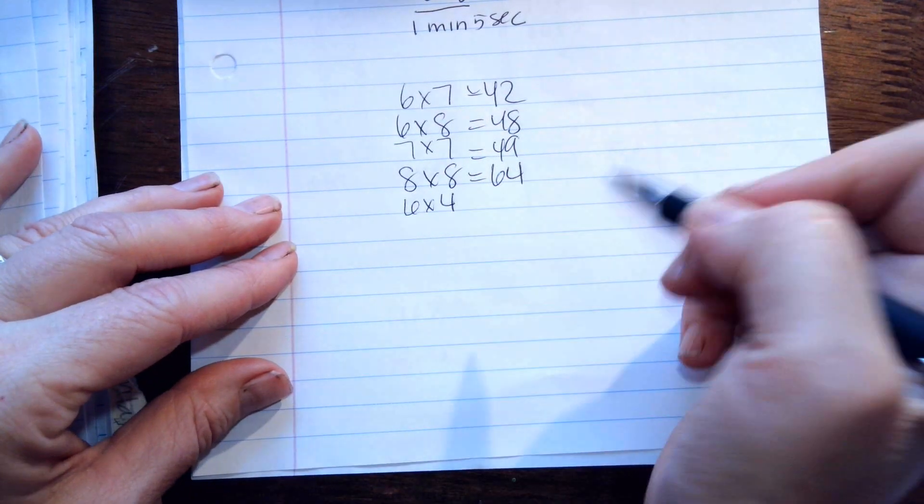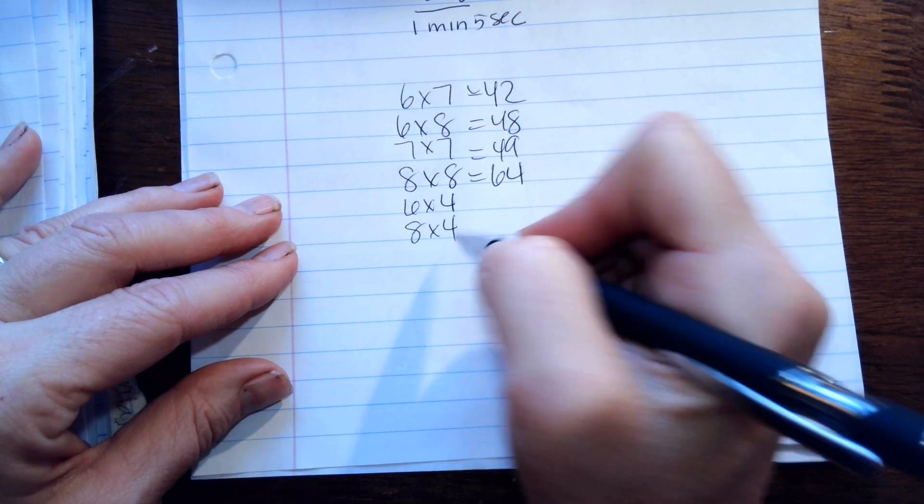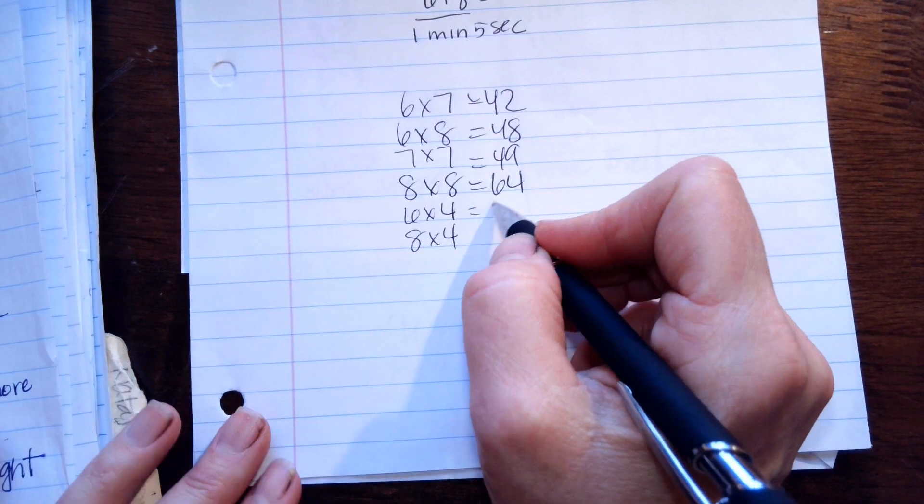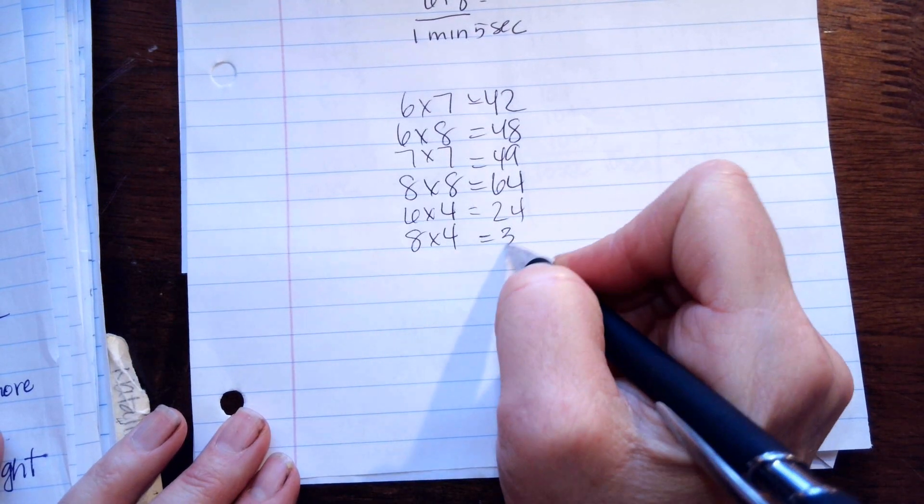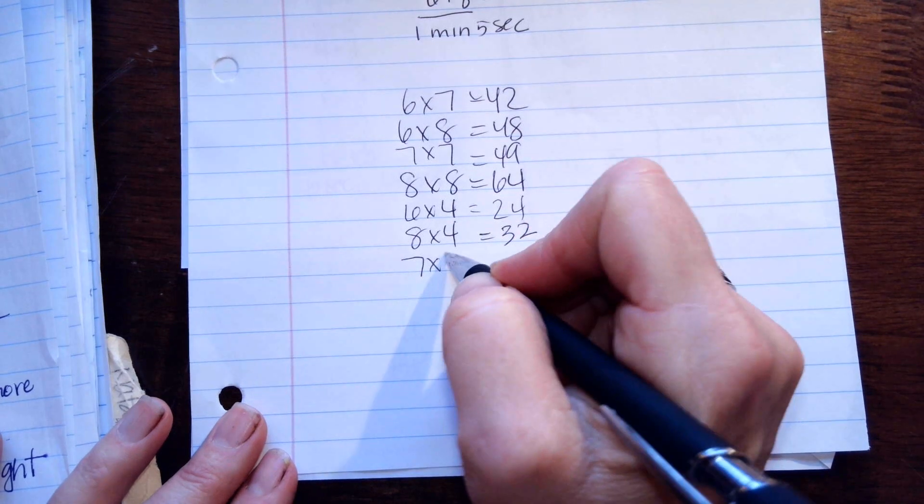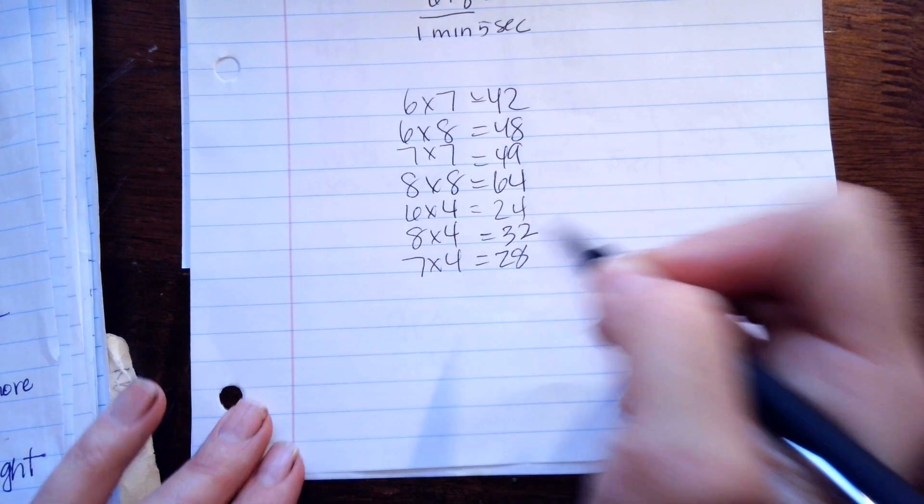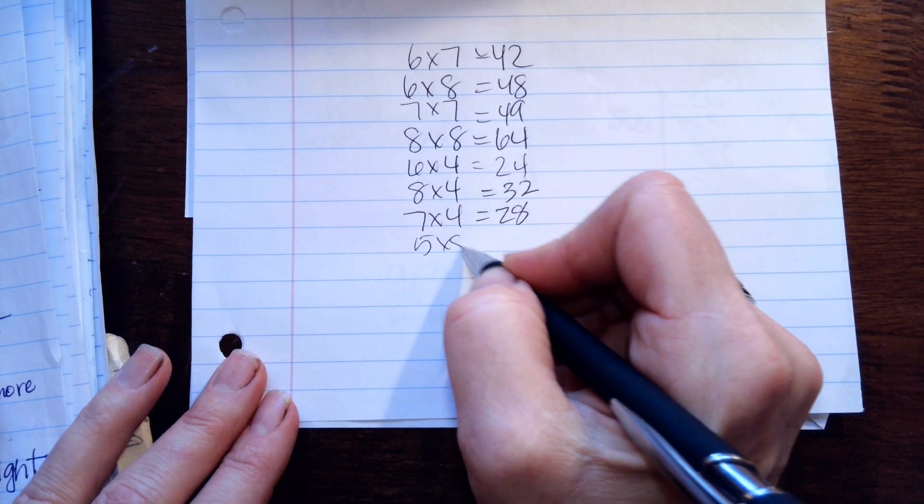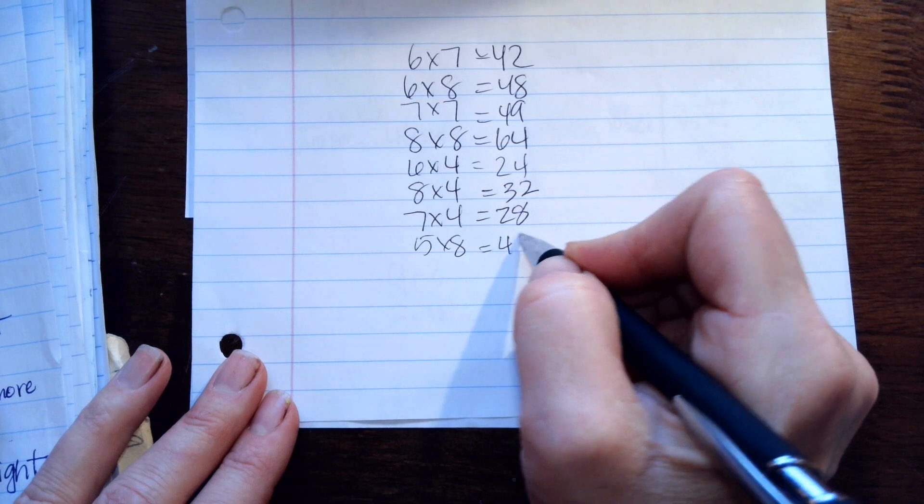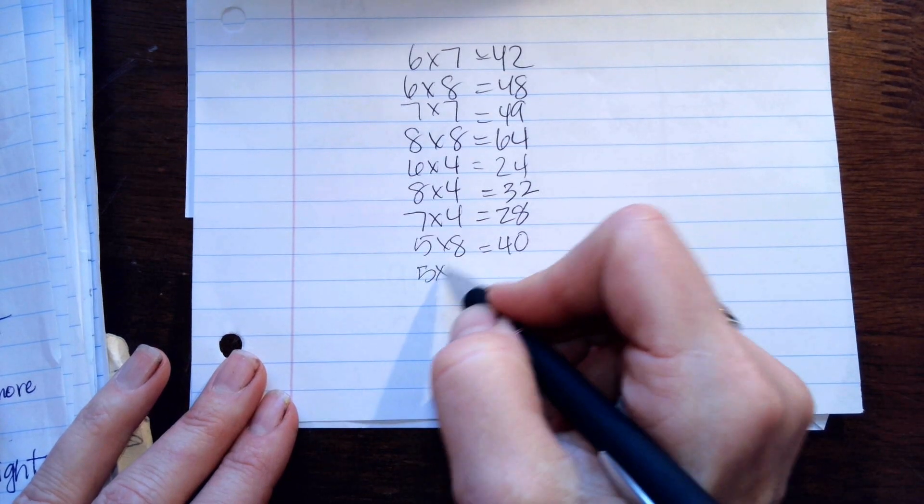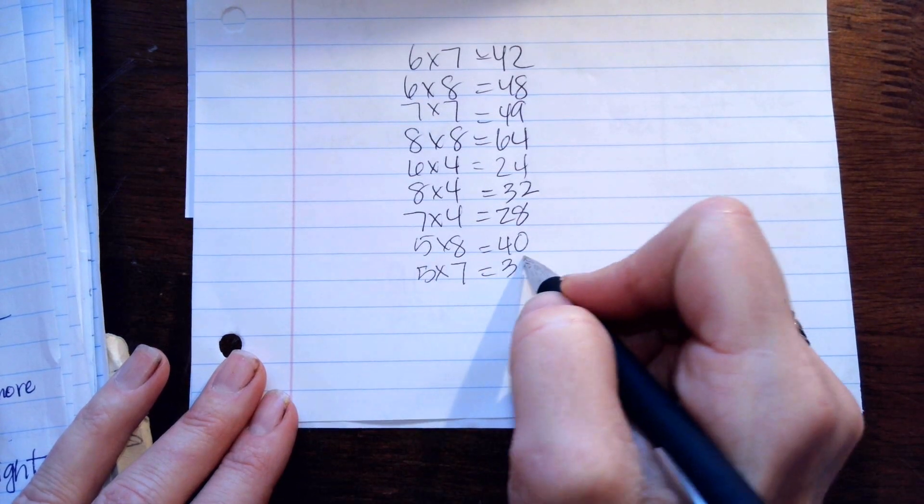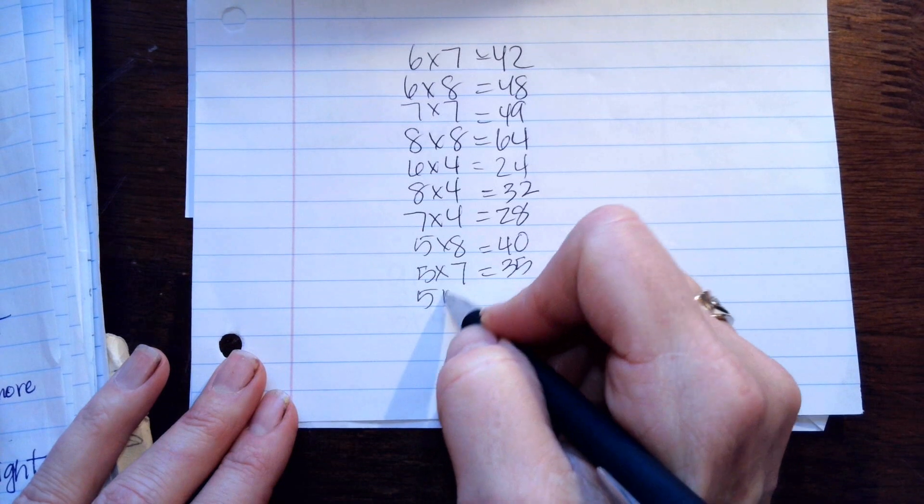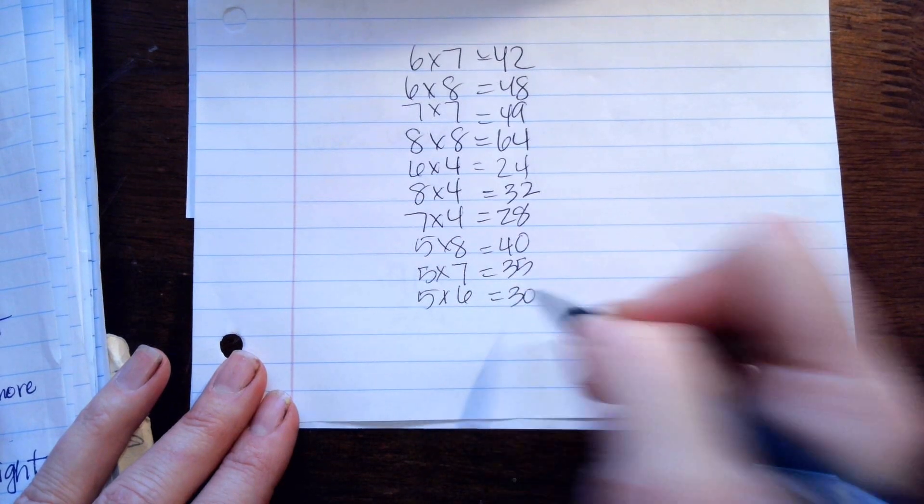6 times 4 is 24, 8 times 4 is 32, 7 times 4 is 28, 5 times 8 is 40, 5 times 7 is 35, 5 times 6 is 30.